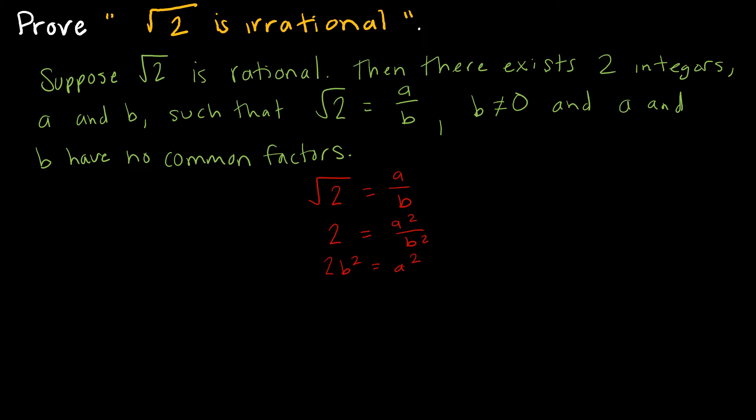Now, what does this tell me? This tells me that A squared must be even. That A must be even, because we know if we square an odd number, we get an odd number. So this tells me that A must be even.